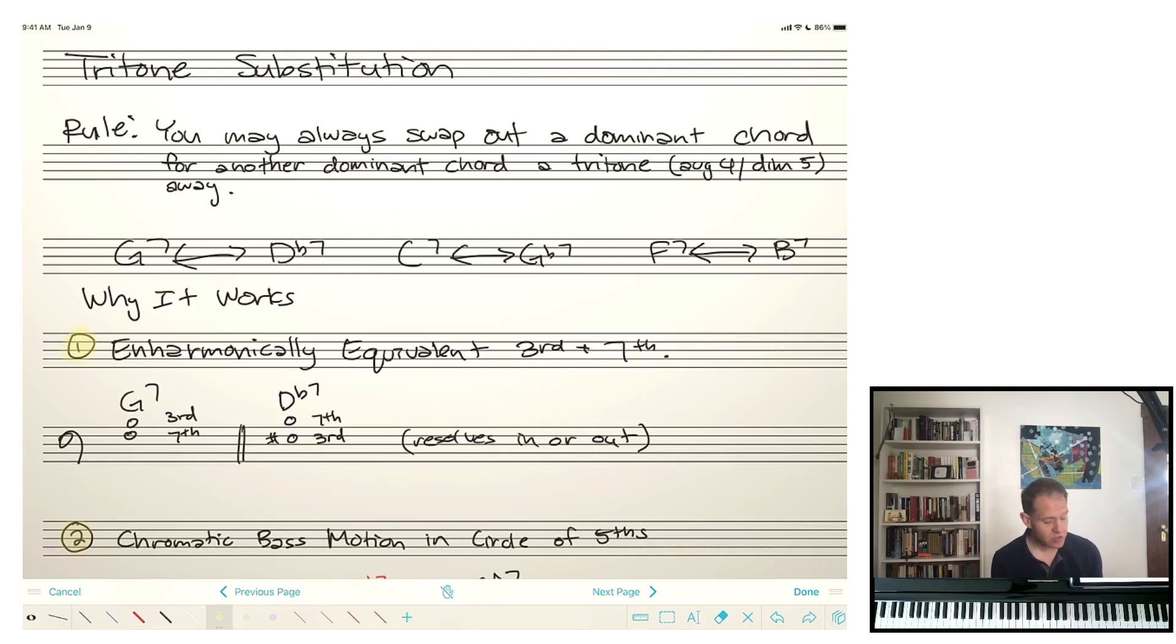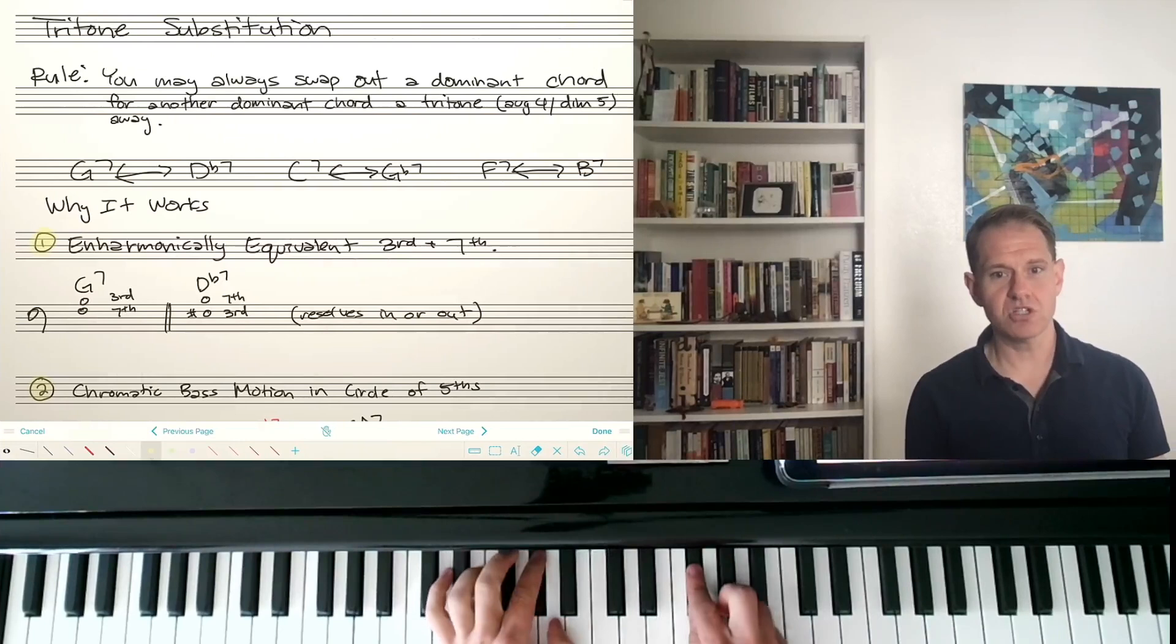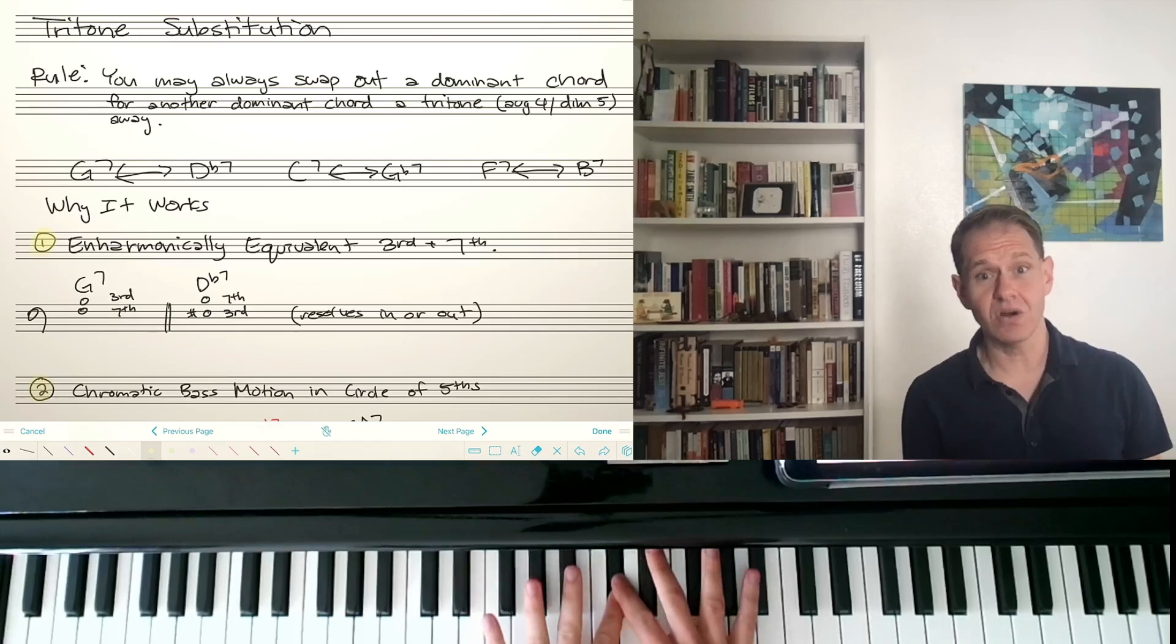A tritone is the interval right in the center of an octave. If you ever have trouble finding a tritone, start on the outer notes of an octave. I'll show you here. So I'm starting on two Gs, and then I'm going to just go in by half steps, and you should end up on the very same note with both of your hands. So here I'm on a D flat. It's the exact middle point of an octave.